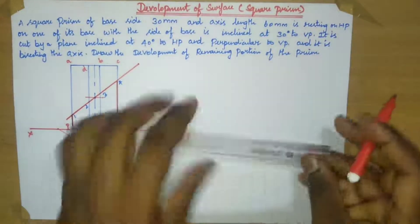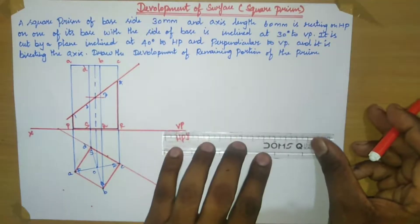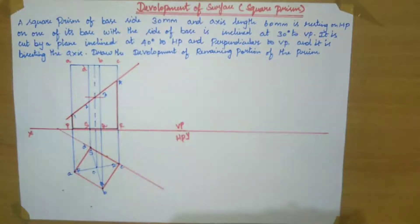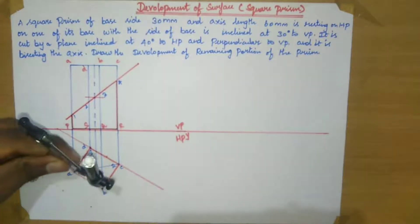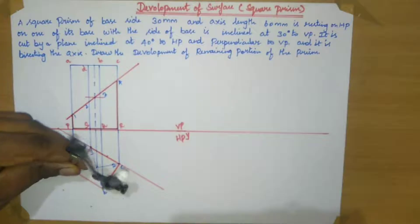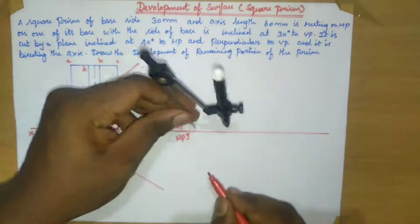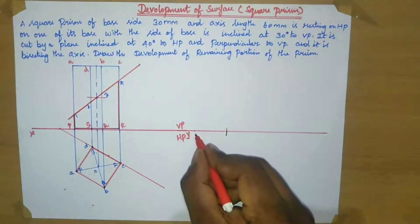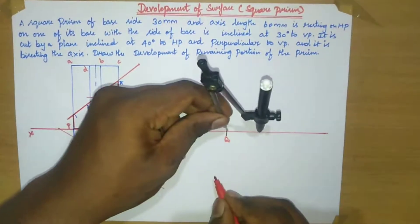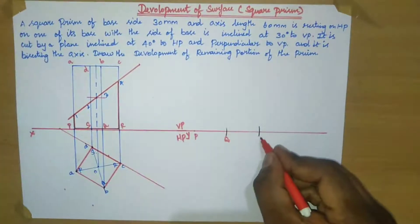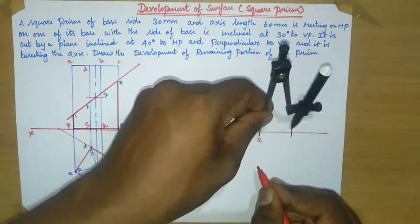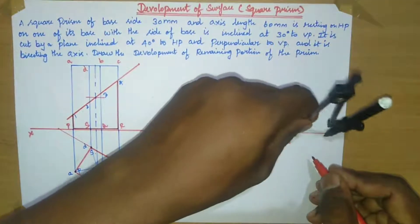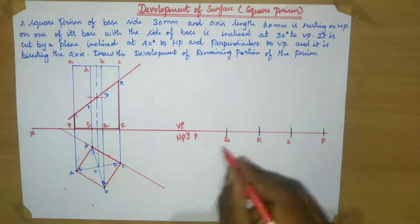Now we are going to draw the development of the remaining portion of the prism. In order to develop the remaining portion, take your compass and measure from P to Q. Take any point as center, cut an arc, and name this point as P and this point as Q. Again from this point as center cut an arc and name this point as R. Again from this point as center cut an arc and name this point as S. Again from this point as center cut an arc and name this point as P.